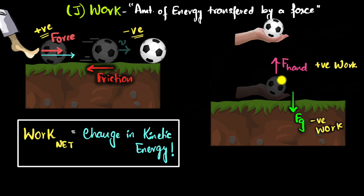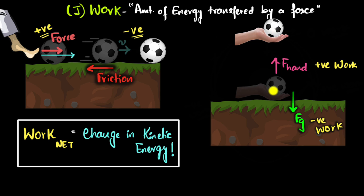But where did the energy go? The force from the hand did transfer energy into the ball, but it didn't get stored as kinetic energy. Instead, the gravitational potential energy increased — so the energy got stored as gravitational potential energy. The energy doesn't disappear; you can always track where it went.